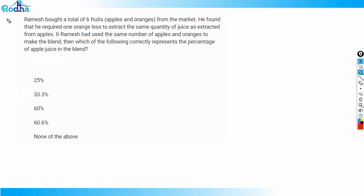This is question number 14, a very good one — a quite logical question. The question says that Ramesh bought a total of six fruits — apples and oranges — from the market. He found that he required one orange less to extract the same quantity of juice as extracted from apples. If Ramesh had used the same number of apples and oranges to make the blend, which of the following correctly represents the percentage of apple juice in the blend?